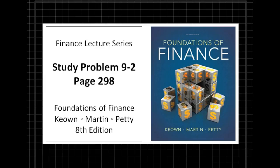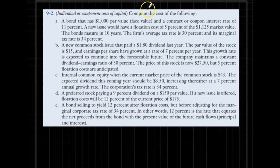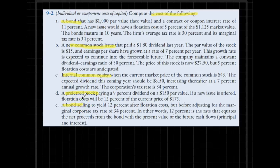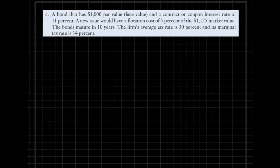Welcome back. In this business finance lecture, we'll go over study problem 9-2 on page 298 from the 8th edition of our textbook. The problem consists of multiple parts, and at the end of the day we need to figure out the cost of capital for each different type of financing method. We have five parts: part A finances by issuing bonds, part B is a new common stock issue, part C is internal common equity, part D raises funds through preferred stock, and part E is another bond issue.